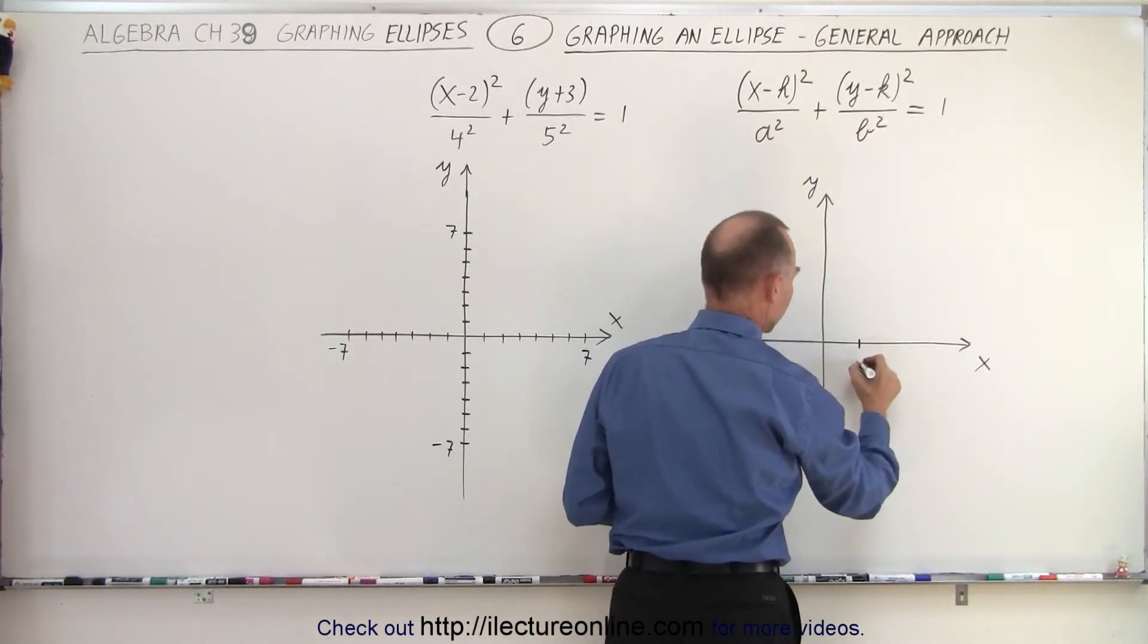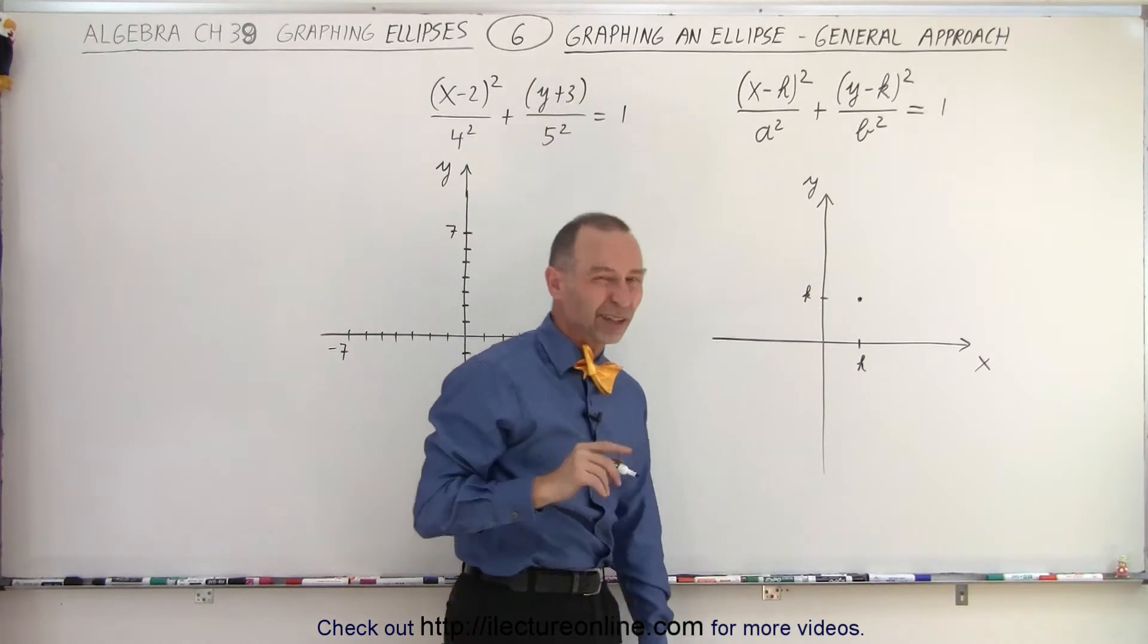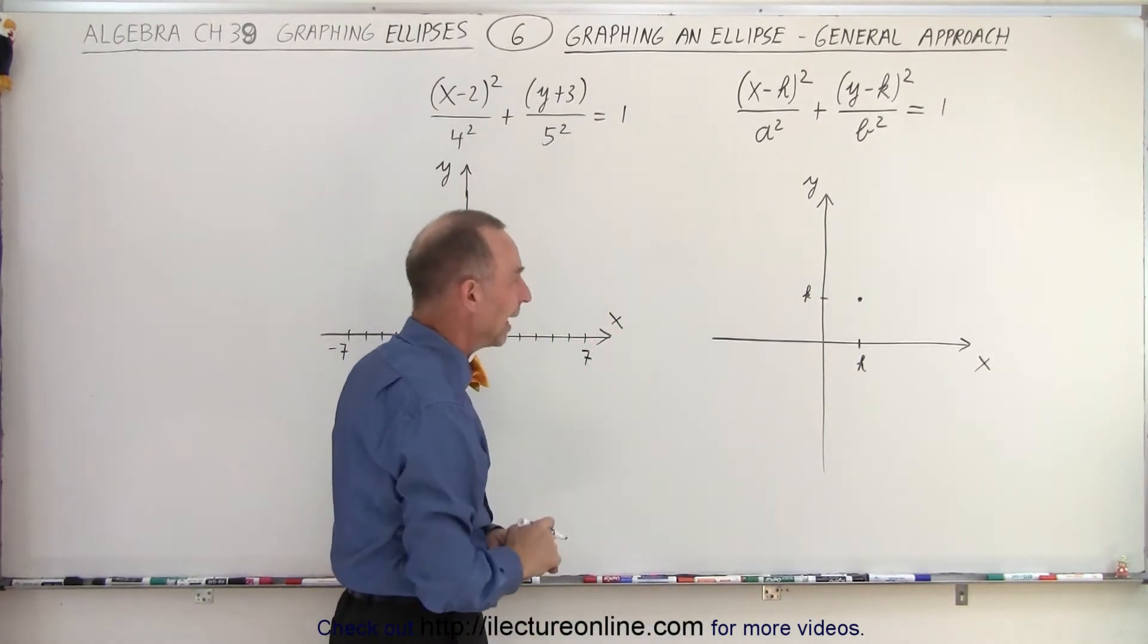So let's say that h is over here, and let's say that k is over here. So that means that the central portion of the ellipse, right there, the central point, not portion, but point, will be right there at h and k.